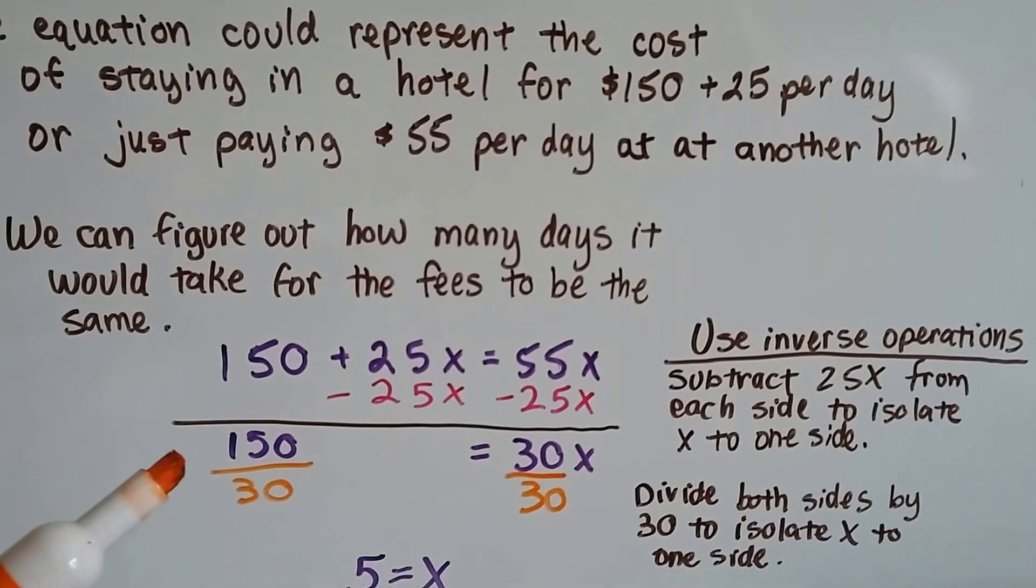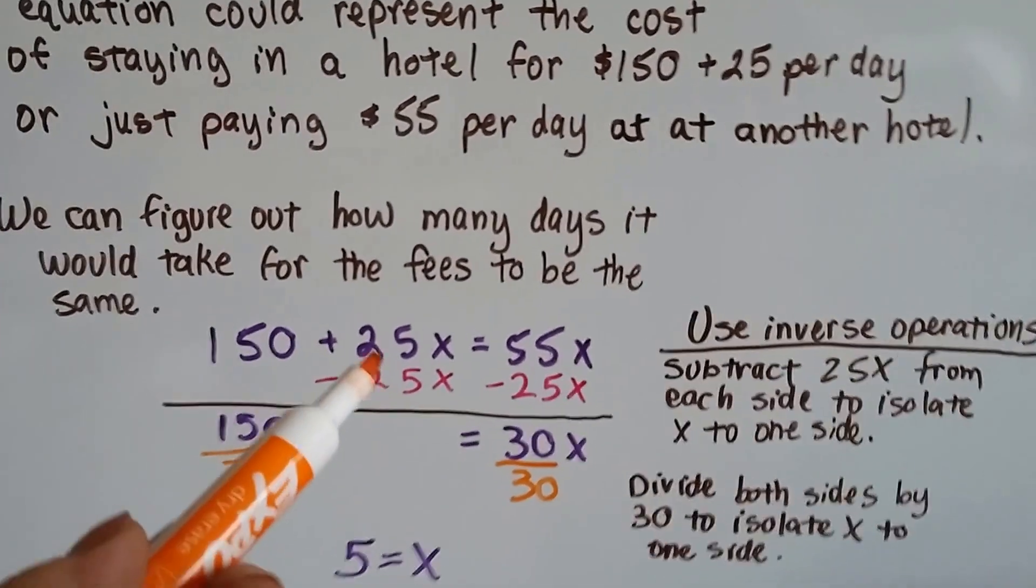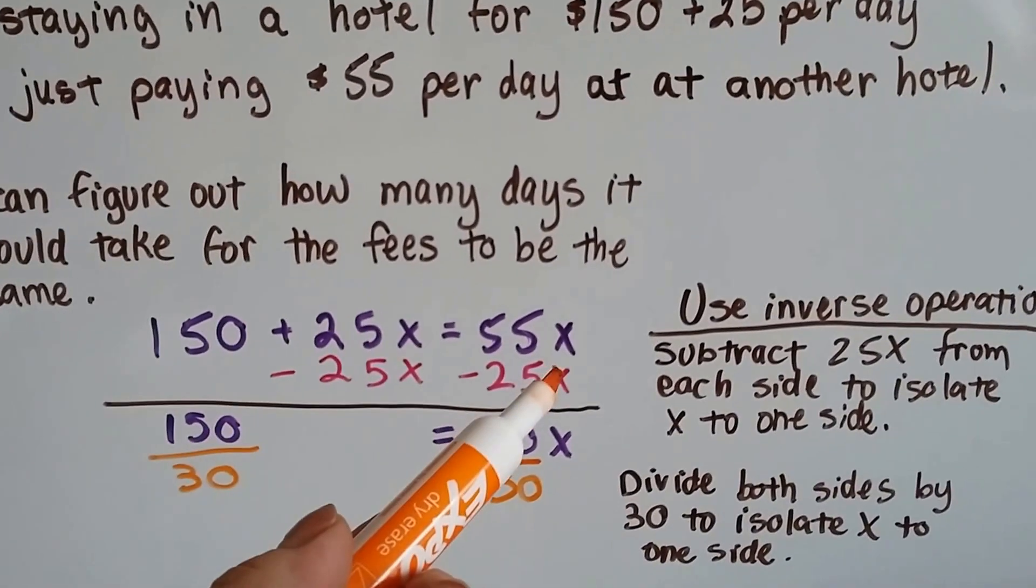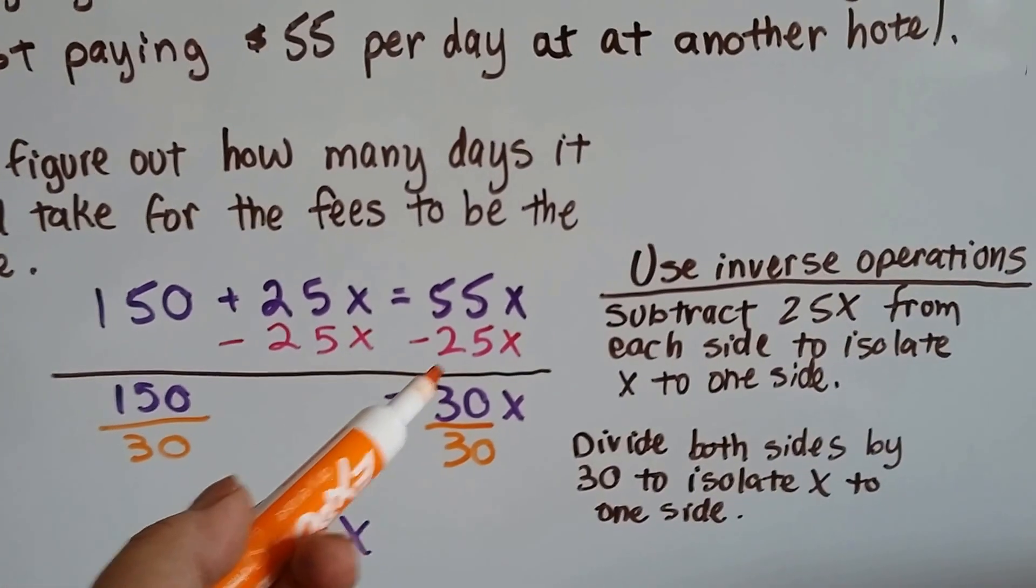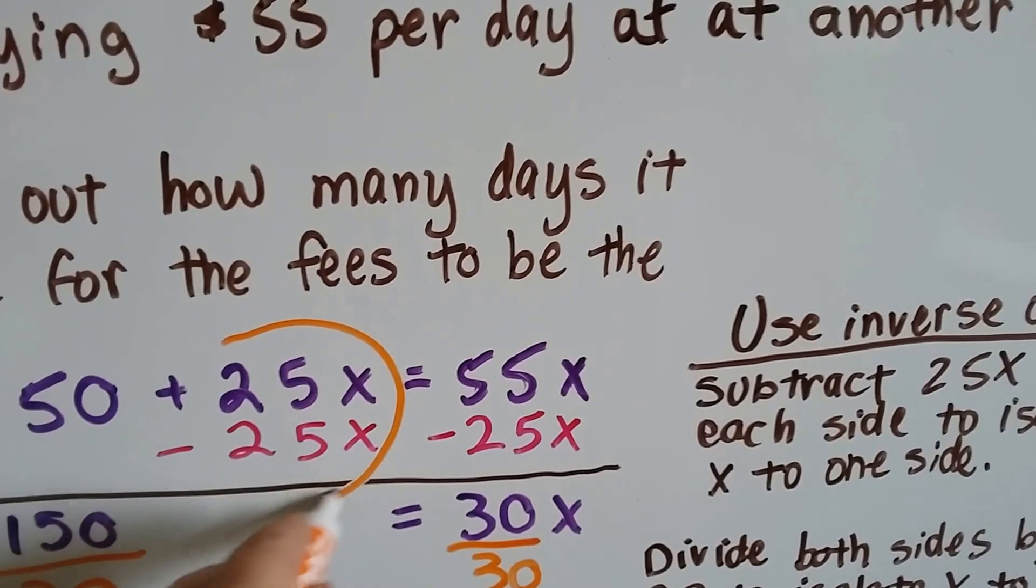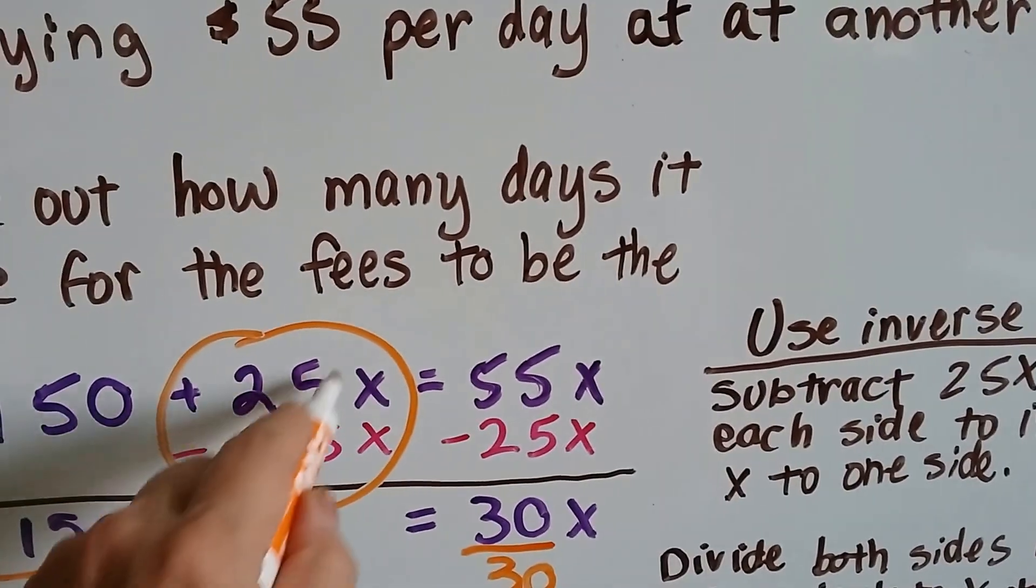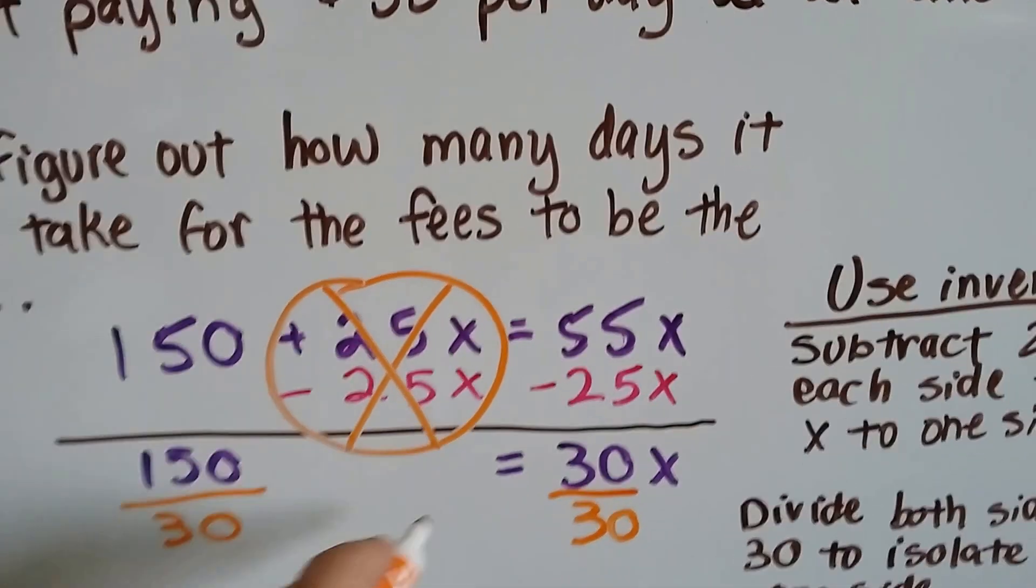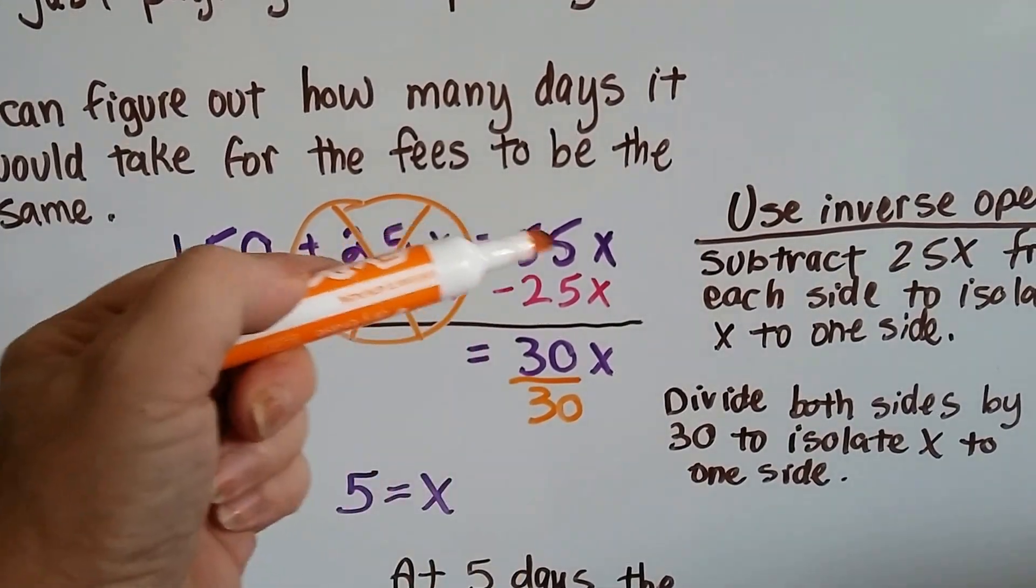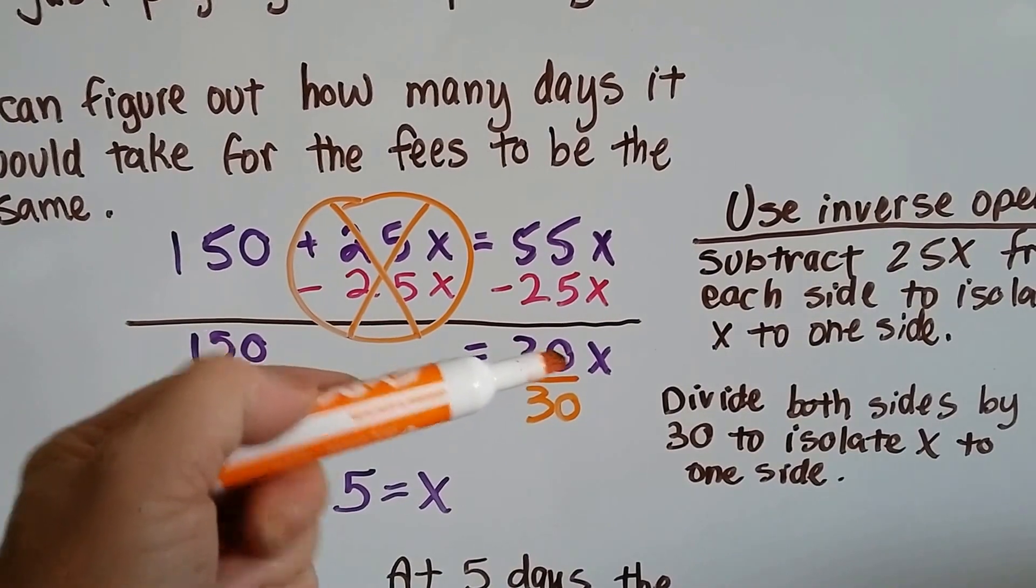We just use inverse operations. We see that this has got a 25x and that's got a 55x. We take the smaller one away from the larger one. Not always, but usually we could do that. And this 25x minus 25x creates a zero pair and cancels it out. So now we've got 150 equals 55x minus 25x is 30x.